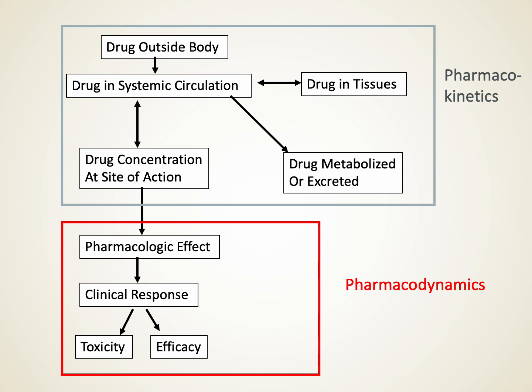To end this first block on kinetics — we've talked about a drug going from outside the body into systemic circulation, all the places it distributes to in tissues, ultimately to its site of action where a physiologic effect produces a clinical response. The graphic has the big picture of pharmacokinetics versus pharmacodynamics. In the next block, we'll talk about the concept of time — how absorption, distribution, metabolism, and elimination happen over time — how you dose a product, when you redose a drug, and what factors go into thinking about all of that.